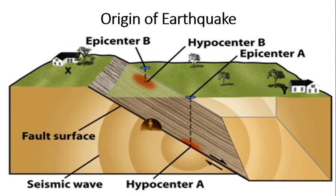This is a typical image showing the origin of an earthquake — the hypocenter, epicenter, fault surface, and seismic wave. Markers or reference points in the field help identify the amount and direction of movement of the fault line.